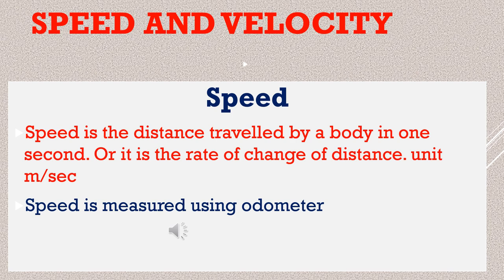In the last video we learnt about speed. Speed is the distance travelled by the object in one second, one minute, or one hour — in short, in unit time. The distance travelled in unit time is called speed, or in short, it is the rate of change of distance. Its unit is meter per second or kilometer per hour. In vehicles like cars or buses, there is a meter that gives you the speed instantaneously, called an odometer. Speed of a vehicle is measured using an odometer.